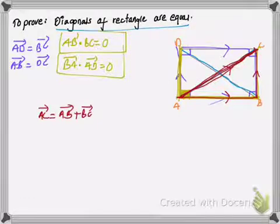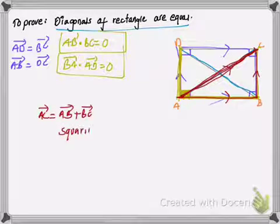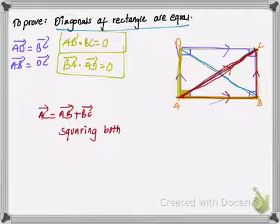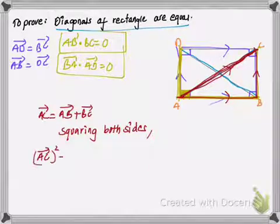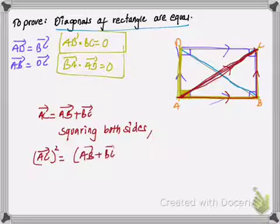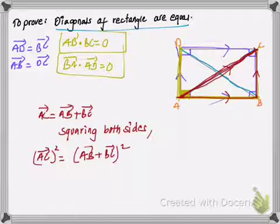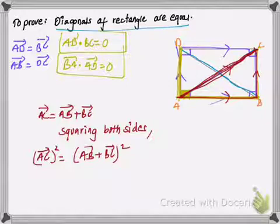Now I'll square both sides. Squaring both sides, what we get is: the square of vector AC is equal to the square of vector AB plus BC. Since we know that when squaring a vector the direction gets cancelled out, we have just the square of magnitude.